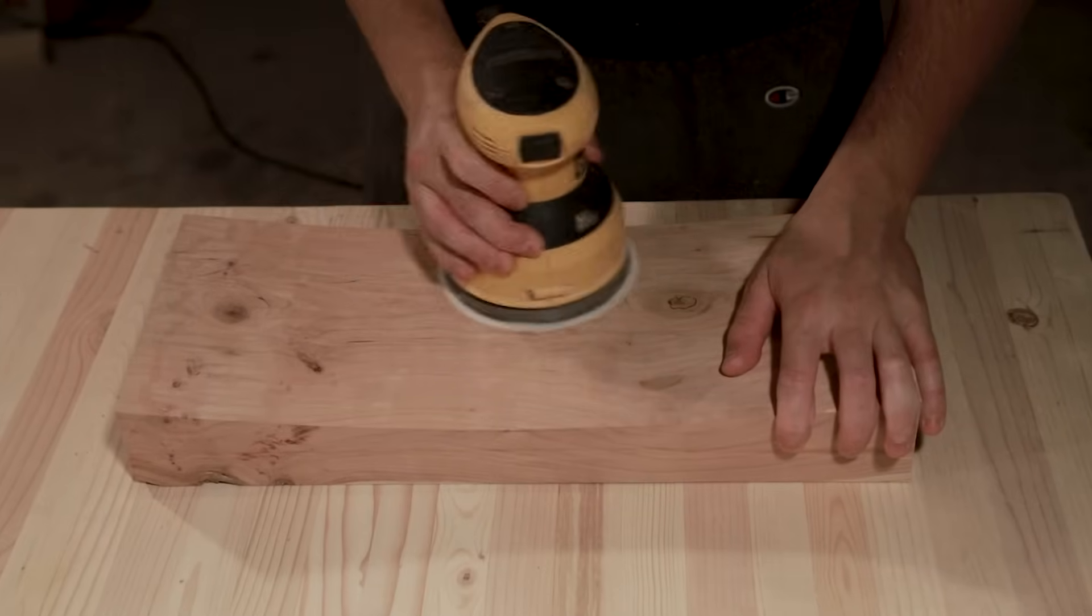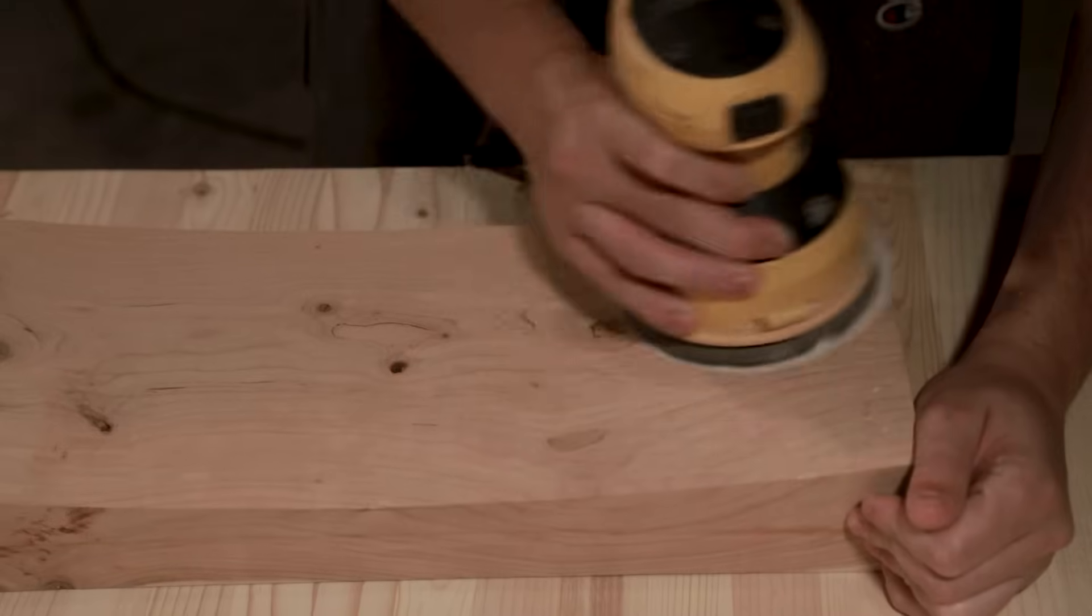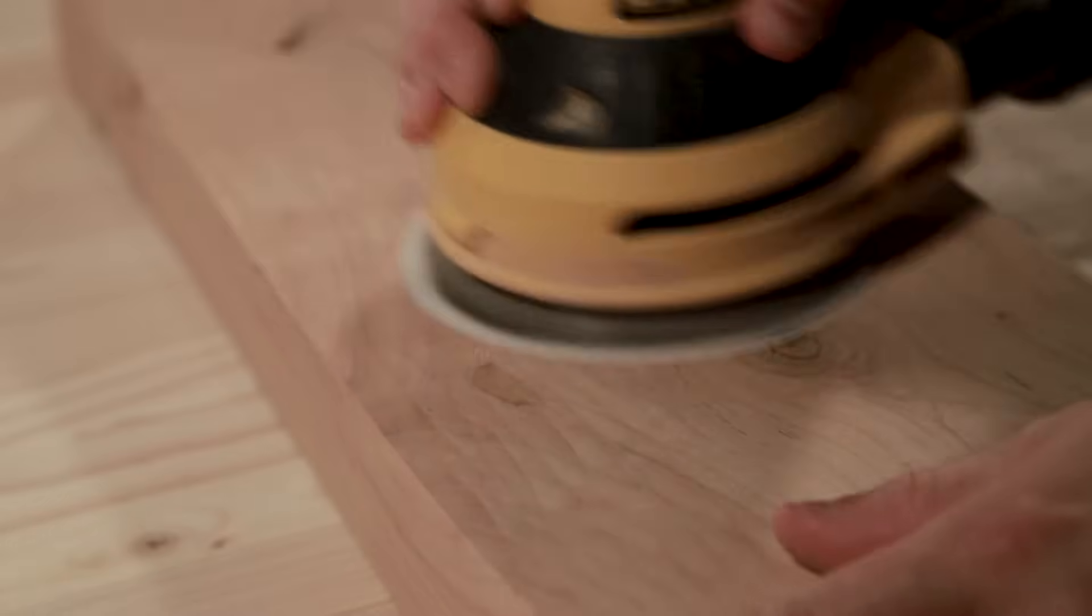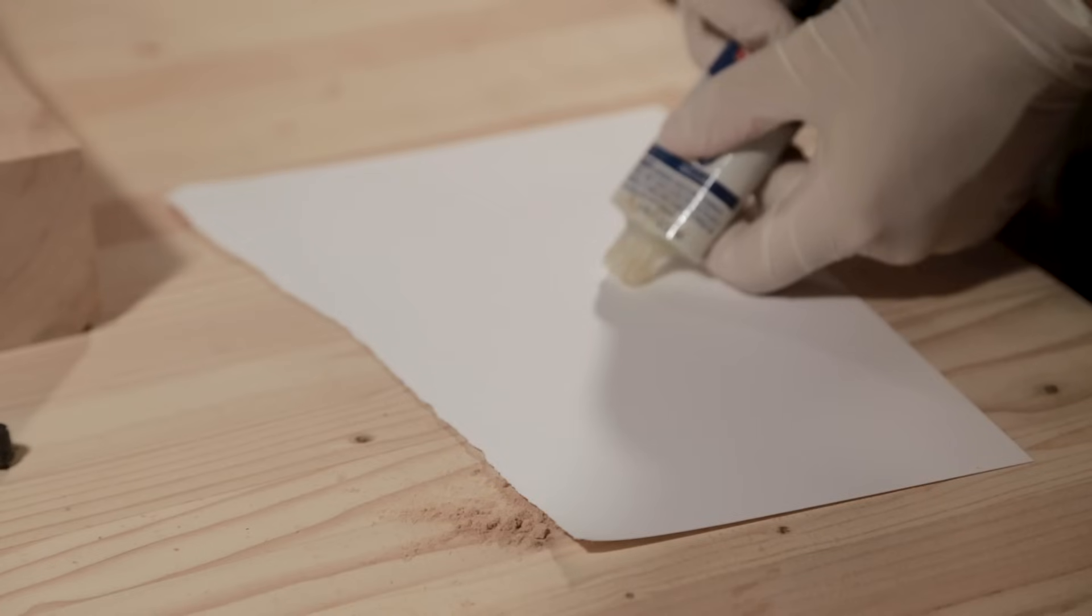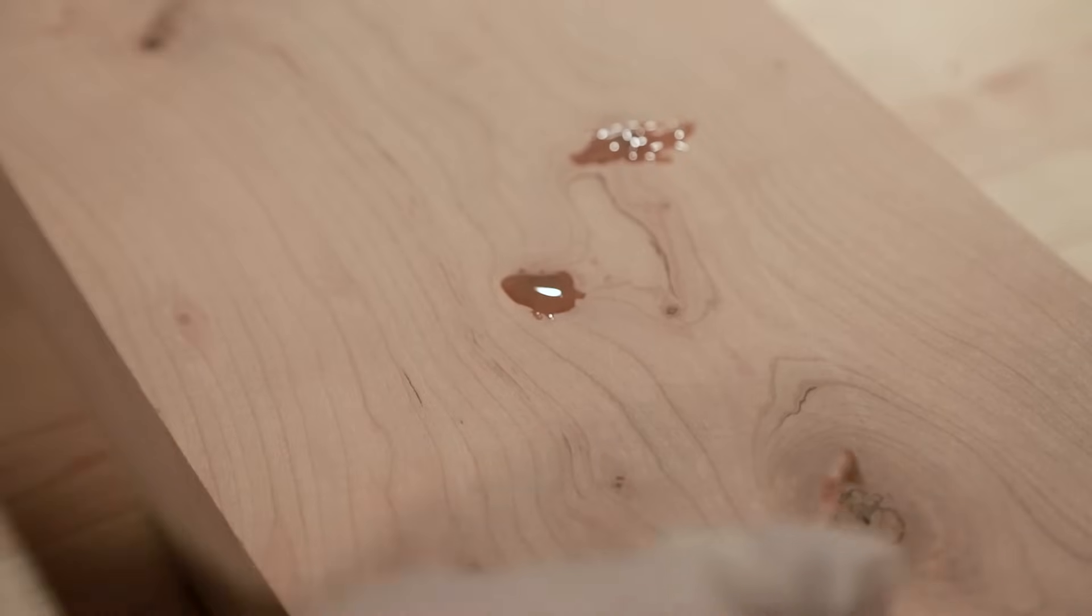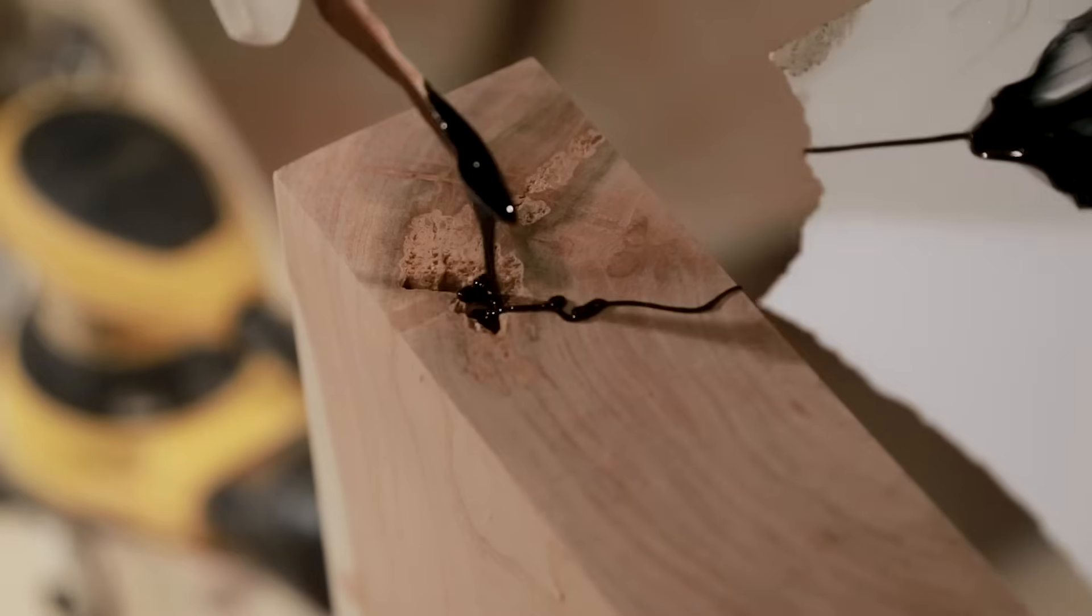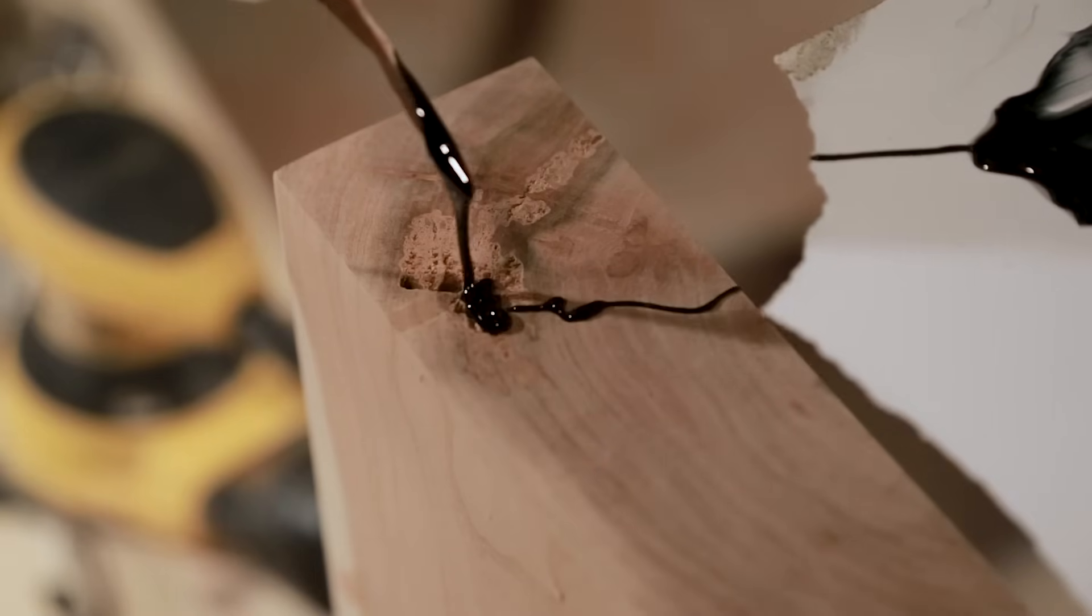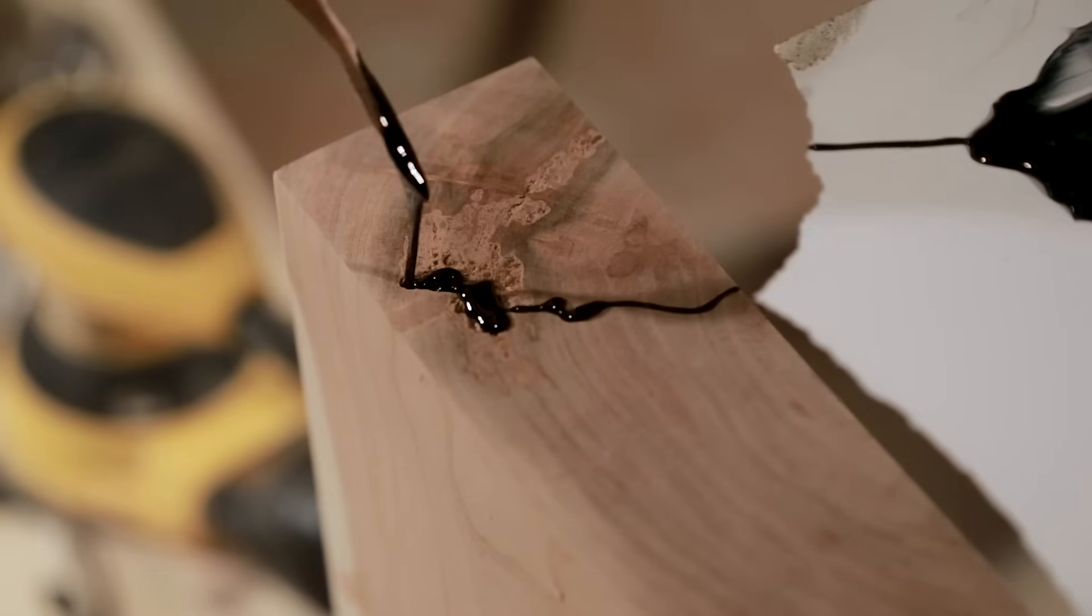I cleaned up any marks left by the router using my sander. To fill any imperfections I used some epoxy and sawdust. I also wanted to try dyeing my epoxy black, so I filled the punky spot of the wood with black epoxy. Then I cleaned it up flush with a card scraper.